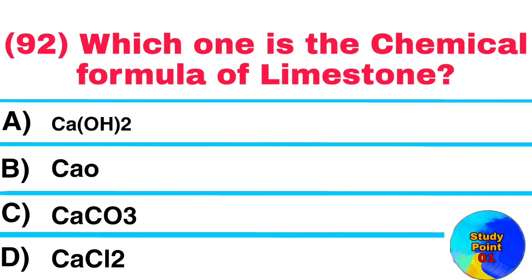Question No. 92. Which one is the chemical formula of limestone? Answer: CaCO3.